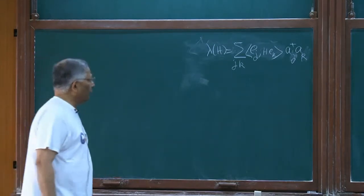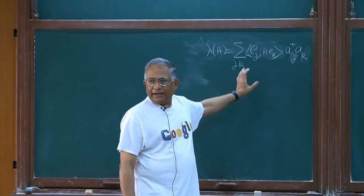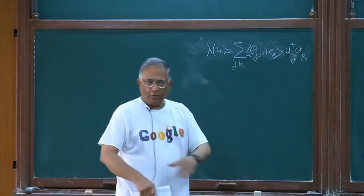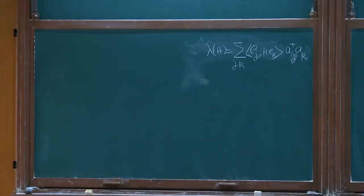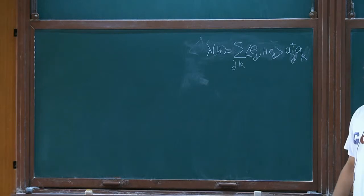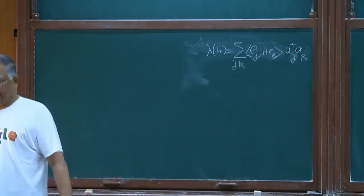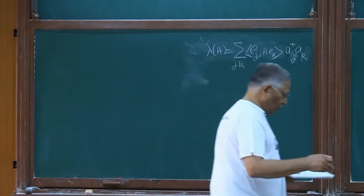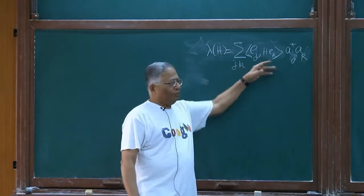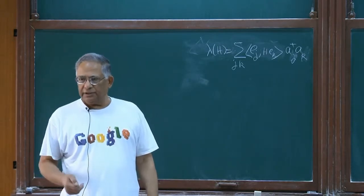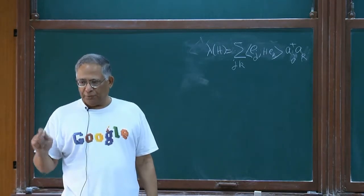You don't expect this right-hand sum to converge on the whole Fock space because these are unbounded operators — all of them. Though H is bounded, lambda H is not bounded. Take H to be the identity — the simplest bounded operator — and calculate it. In fact we will need that. So this is an unbounded operator. You can show easily that the right-hand side converges strongly on the exponential domain.